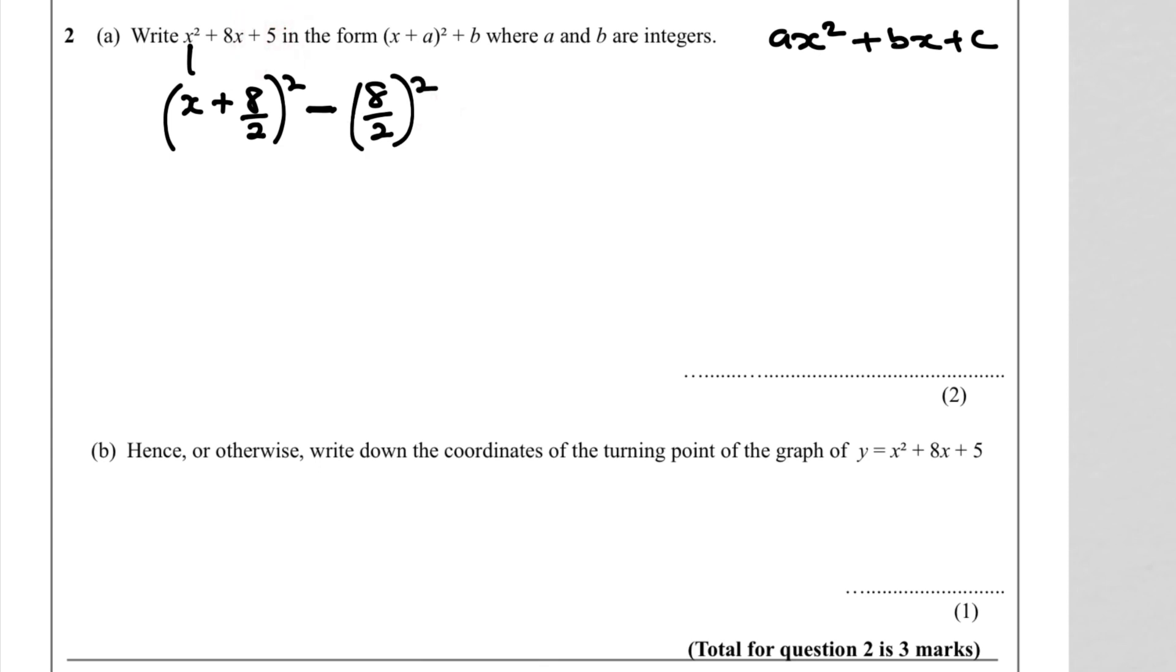Add 5 to get (x+4)² - 4² + 5, which simplifies to (x+4)² - 11. Therefore, the graph is U-shaped because a is positive.